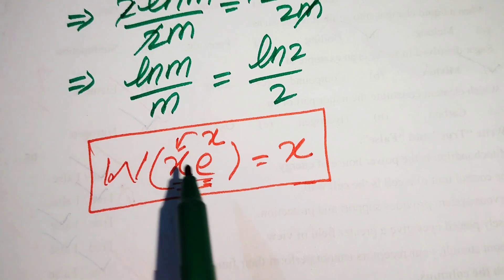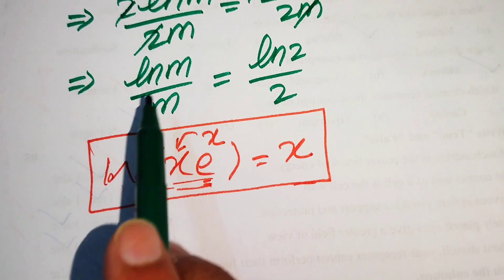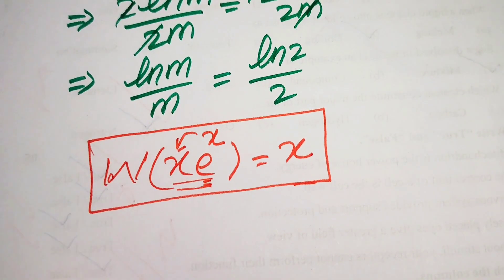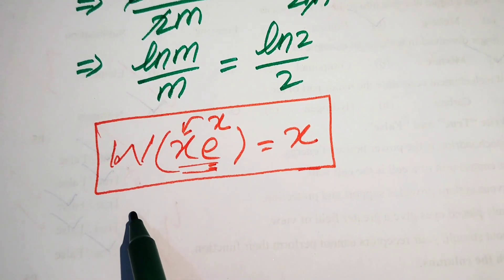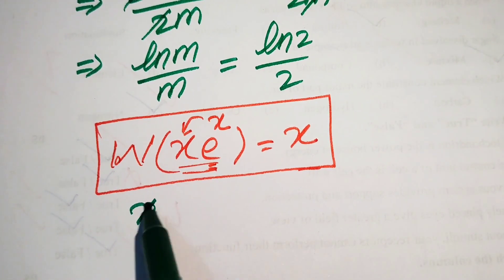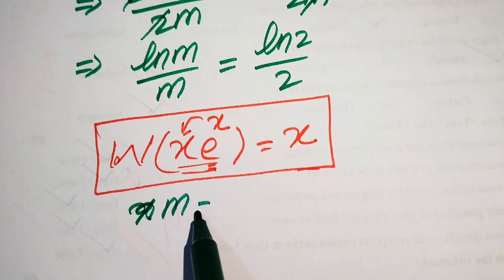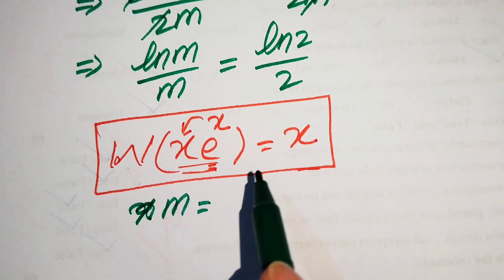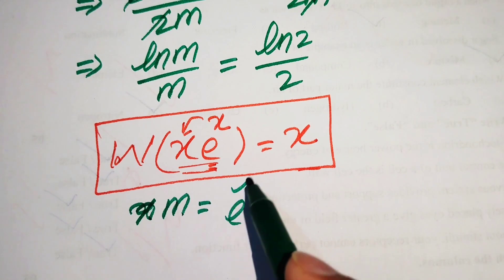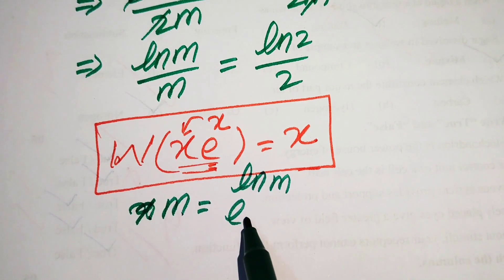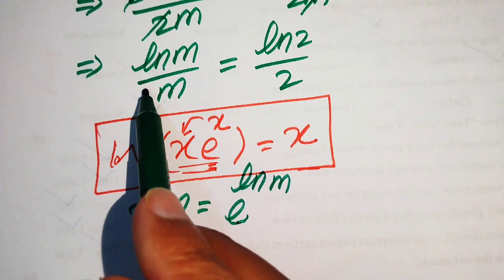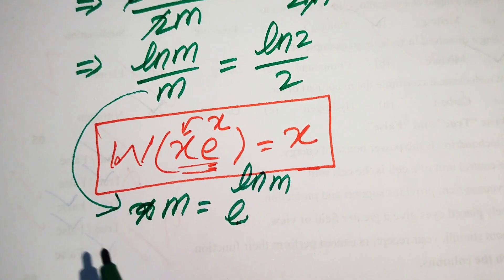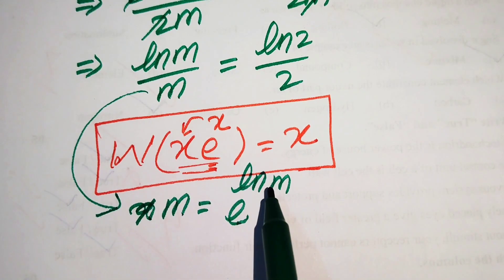We now make the left-hand side match the form required for the Lambert W function by introducing an exponential term e. We use the fact that m equals e to the power of log m, since e and log cancel each other. So we replace m in the denominator with e to the power of log m.